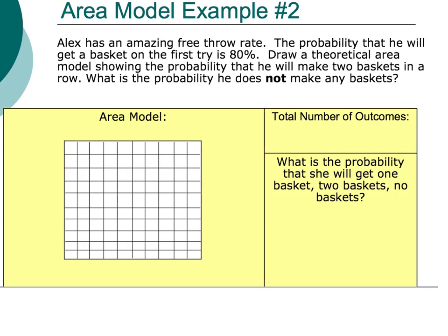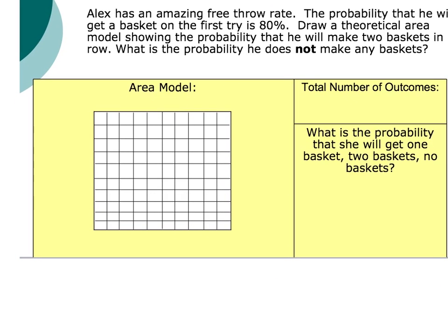The second situation we're going to look at involves free throw rates — just one point for each basket made. Alex has an amazing free throw rate. The probability that she will get a basket on the first try is 80%. Draw a theoretical area model showing the probability that she will make two baskets in a row. What is the probability that she does not make any baskets?